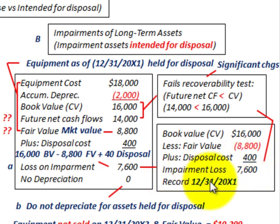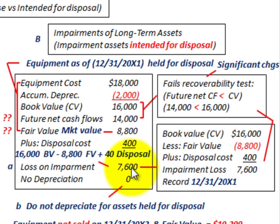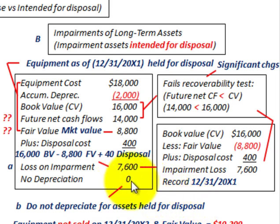We record this impairment loss of $7,600 on 12/31/20X1. The loss on impairment is our $16,000 book value less the $8,800 fair value plus $400 disposal costs. Since we intend to dispose of this equipment, there is no depreciation — you do not depreciate assets held for disposal.